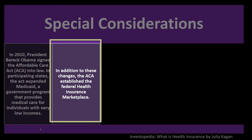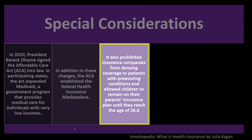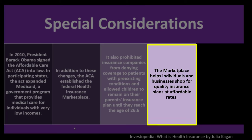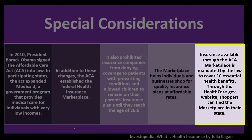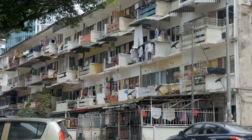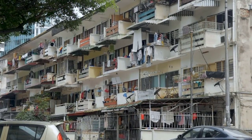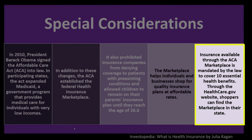The ACA prohibited insurance companies from denying coverage to patients with pre-existing conditions and allowed children to remain on their parent's insurance plan until age 26. The marketplace helps individuals and businesses shop for qualified insurance plans at affordable rates. Insurance available through the ACA marketplace is mandated by law to cover 10 essential health benefits. Note it can be complex, with additional laws, regulations, and tax situations tied to premium calculations.